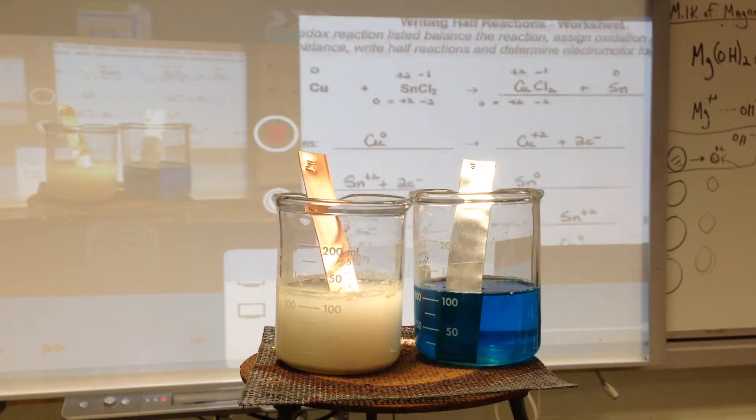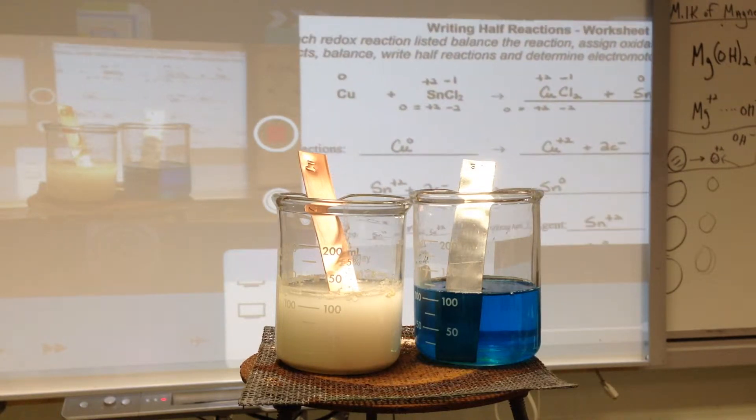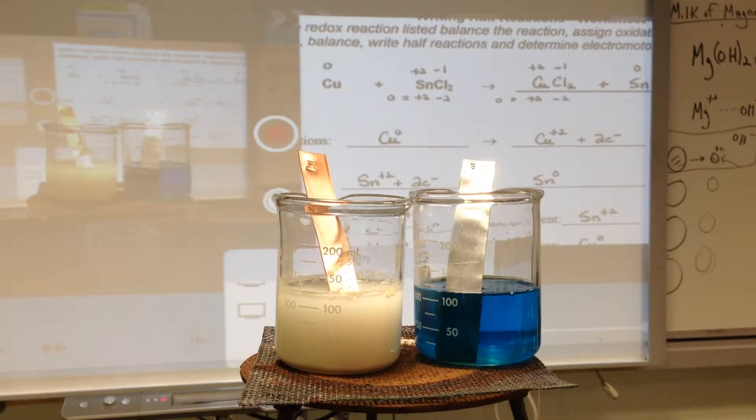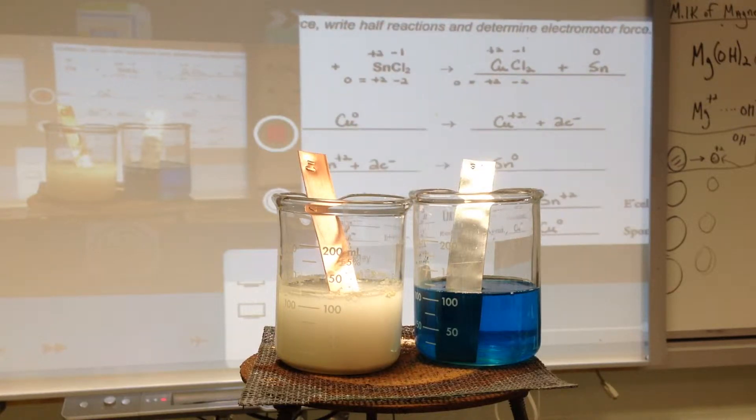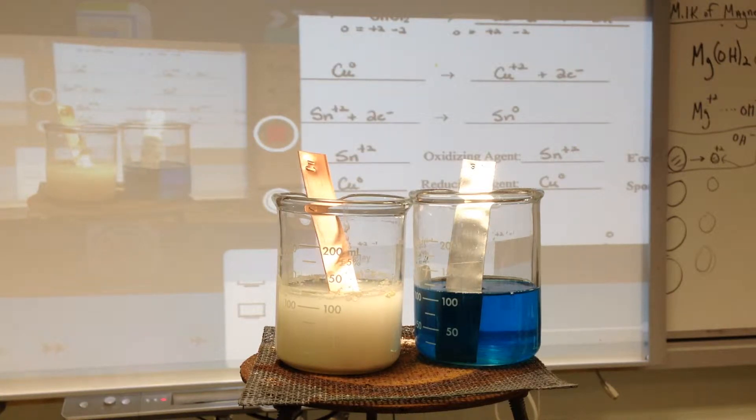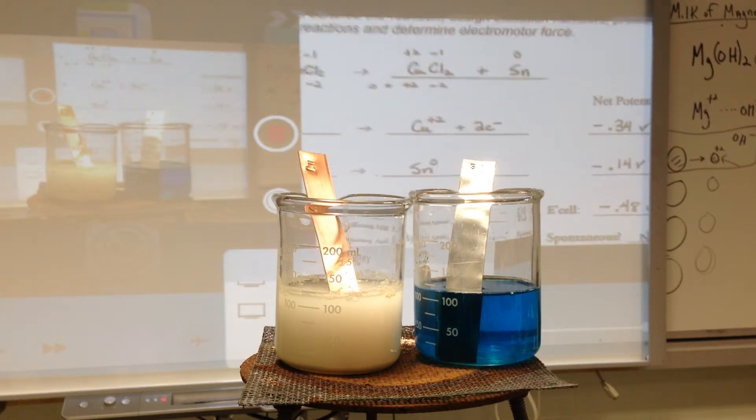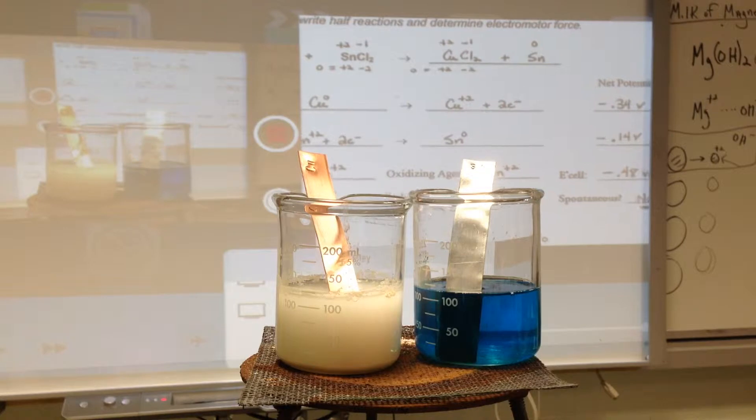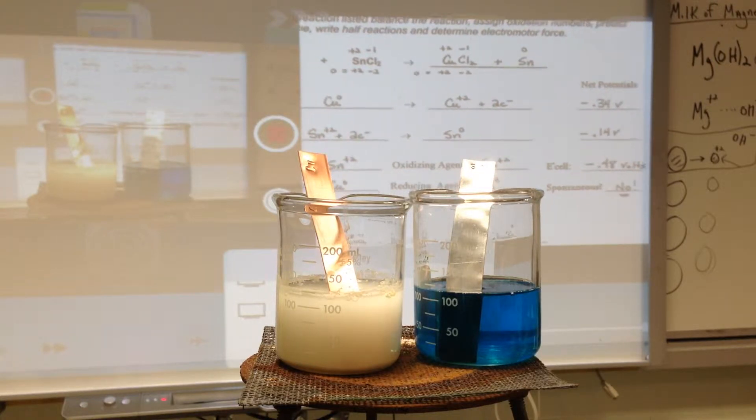are right here. Copper will go to copper plus two, tin plus two goes to copper, if this works. Using your reduction potential table, you're going to figure out that the half reaction of copper is negative 0.34 when you consider the oxidation.